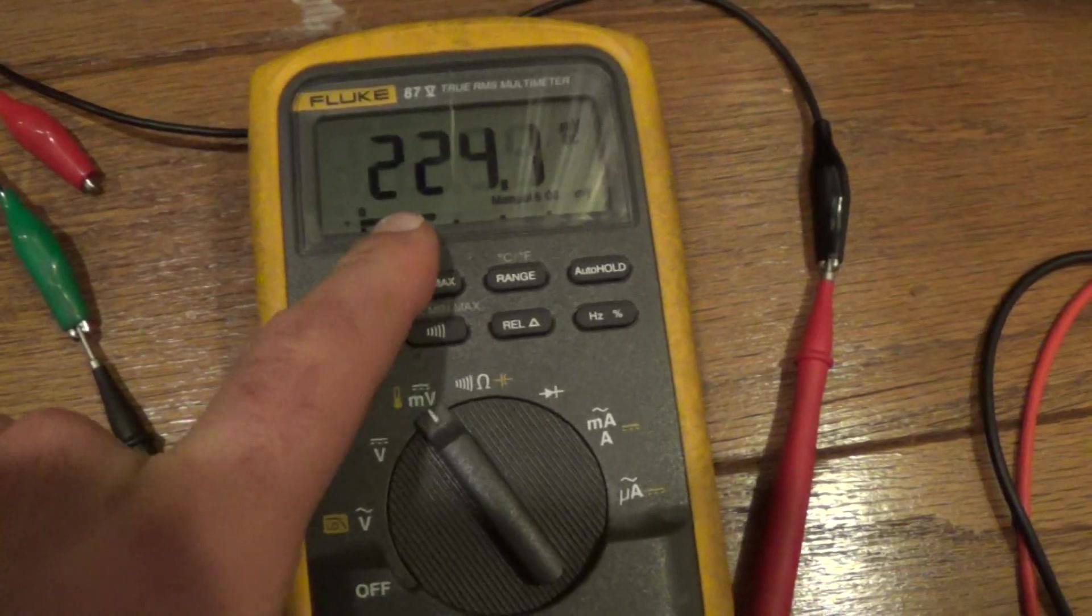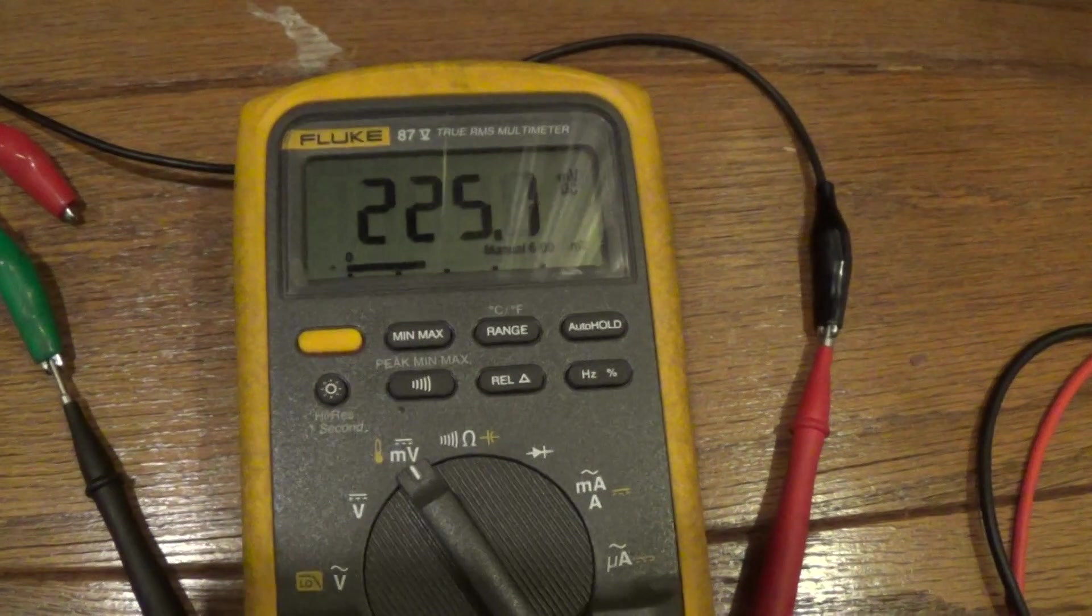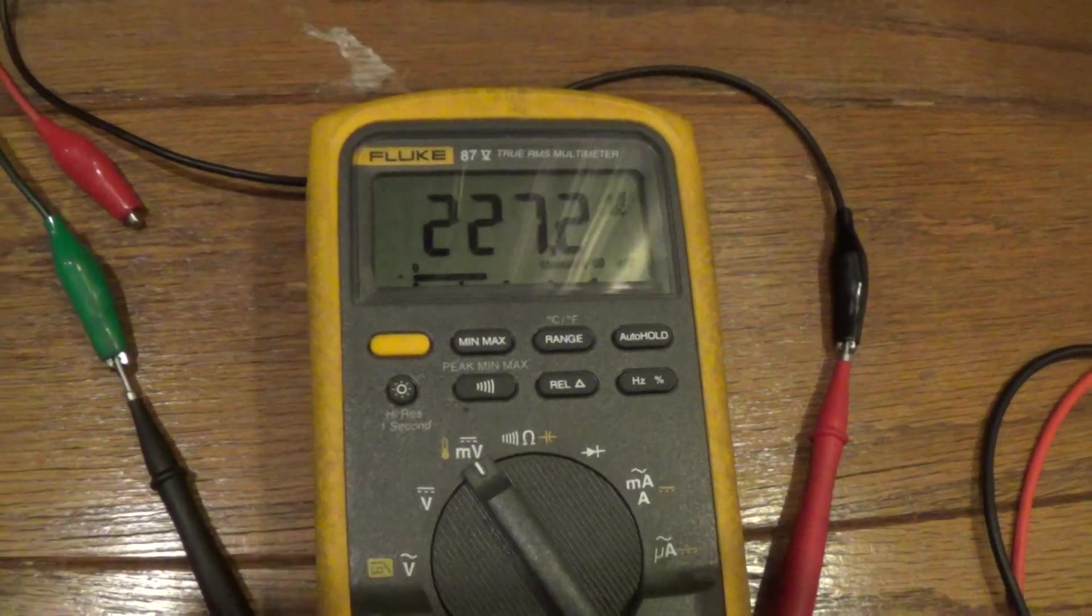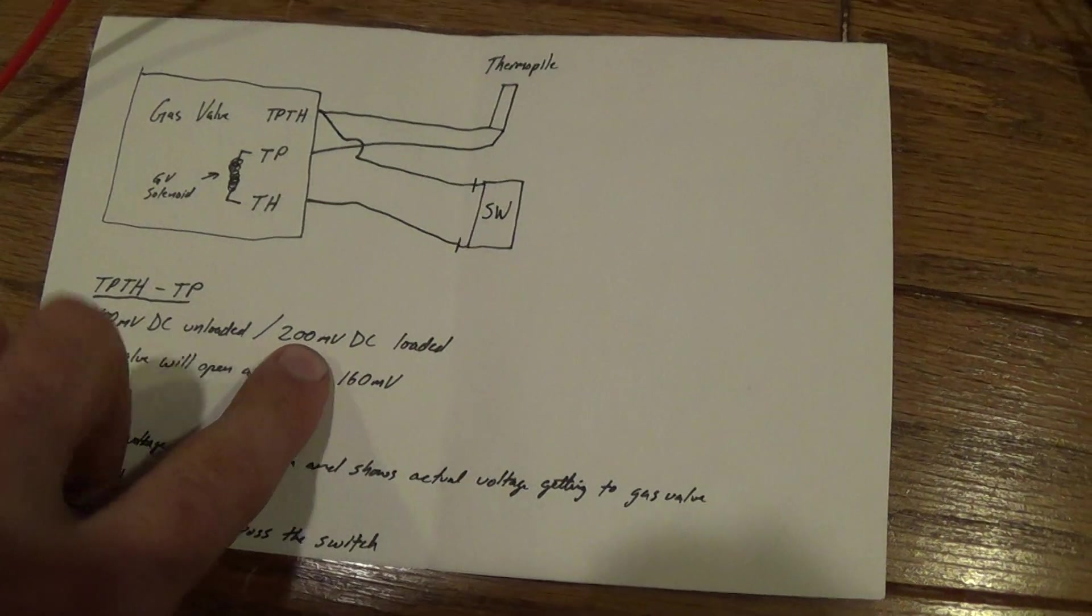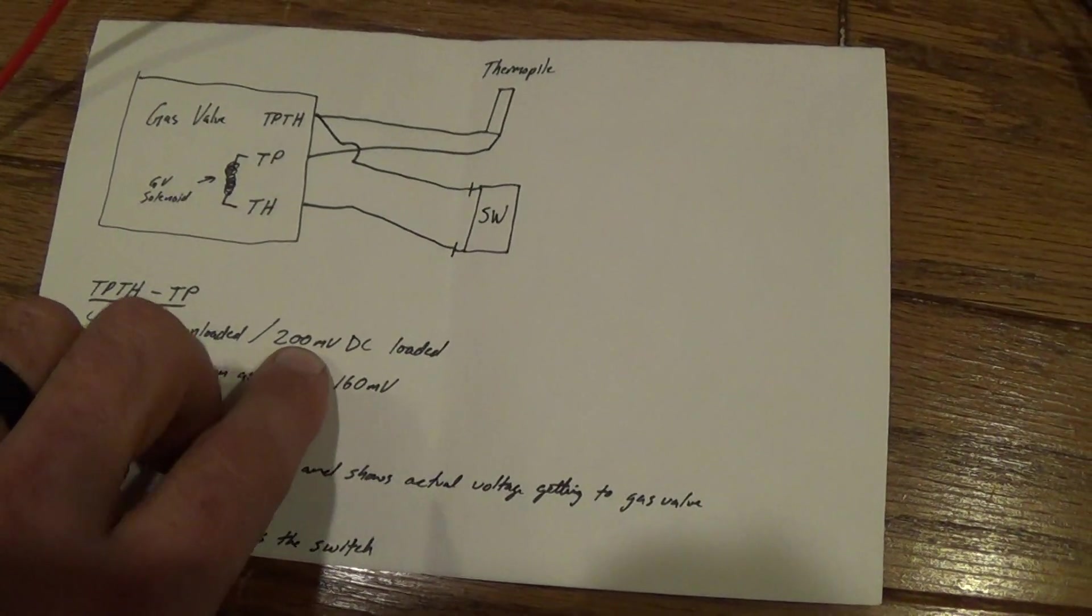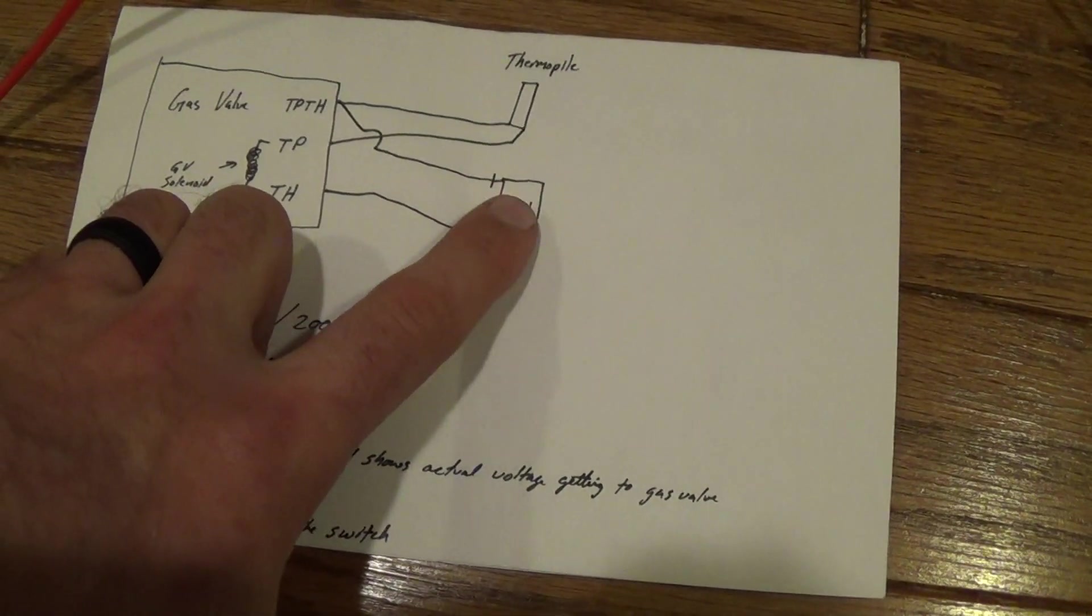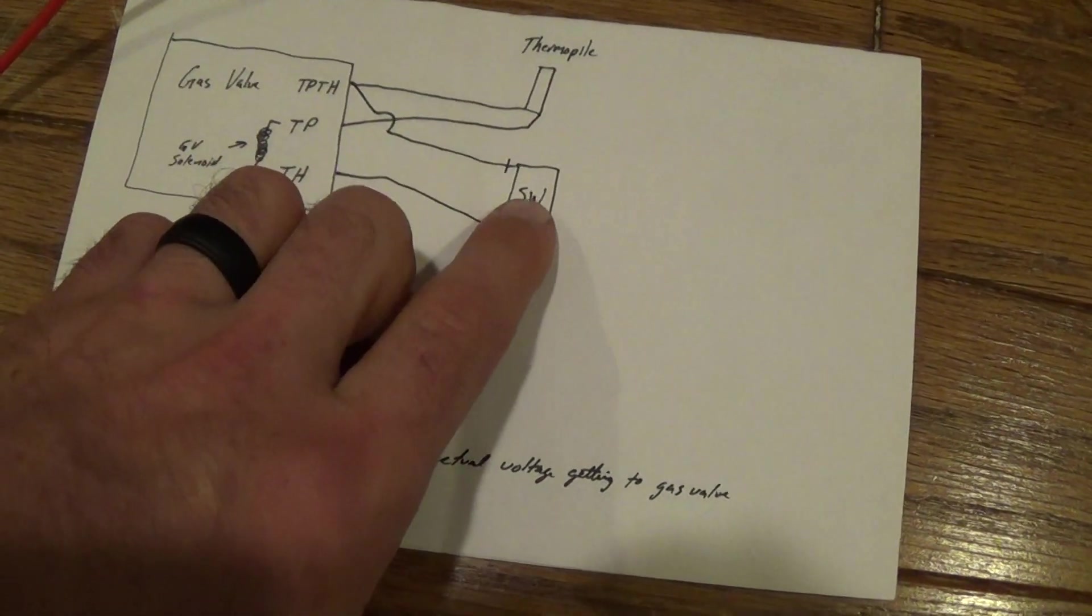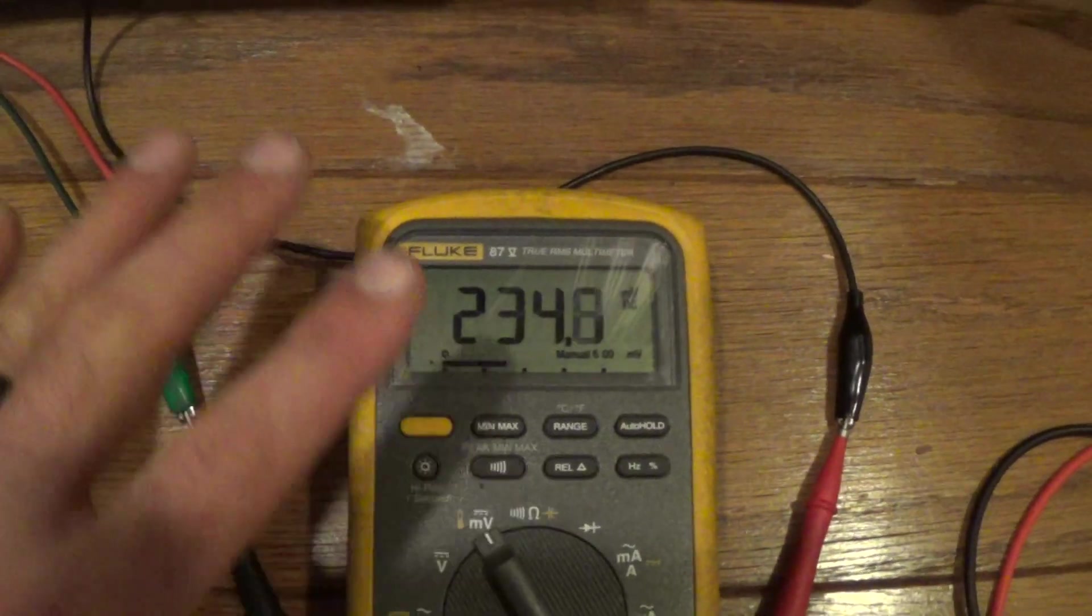And I dropped down to 223. You can see that the switch, even if the contacts are perfect, you are going to have some voltage drop in the wiring. It doesn't take much voltage drop to drop this small amount of voltage down below that target of 200 millivolts DC. You really got to make sure that all your connections are tight and the switch is in perfect condition.